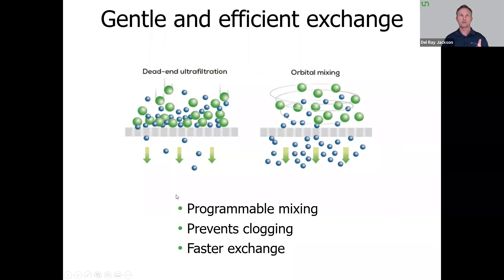Dead-end ultrafiltration is a common problem where you can aggregate proteins or get a lot of them clumping up at the membrane interface, which really hits your sample recovery. With BigTuna, using a gentle orbital mixing that's programmable — or part of those presets for your biomolecule of interest — you avoid clogging, delivering higher sample recovery. It's also a way to get faster exchanges done, which is critical for something like LNPs. These aren't things that you would get with other techniques like vacuum filtration or centrifuge filter plates.